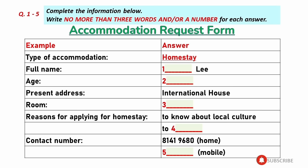OK, Aaron. Are you unsatisfied with your flat now? Actually, my flat is all right, but I hope to move into a local family, to have more opportunities to know about local culture and to improve my English. Tell me your contact number. My home number is 81419680, and my mobile phone is 75863344.